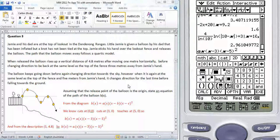This is for Mathematical Methods. It's the 2011 Functions Application Question Number 3, which is Jamie and his data on top of the Lookout and the Dandenong Ranges.